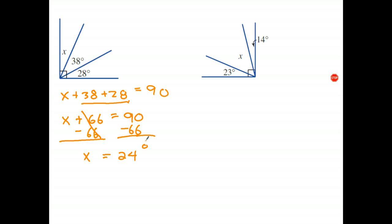And as a quick check, you could say 66 plus 24, well, 60 plus 20 is 86, plus 4 is 90. Okay, another way you could set the work out would just be to say that x equals 90, take away 23, take away 14.